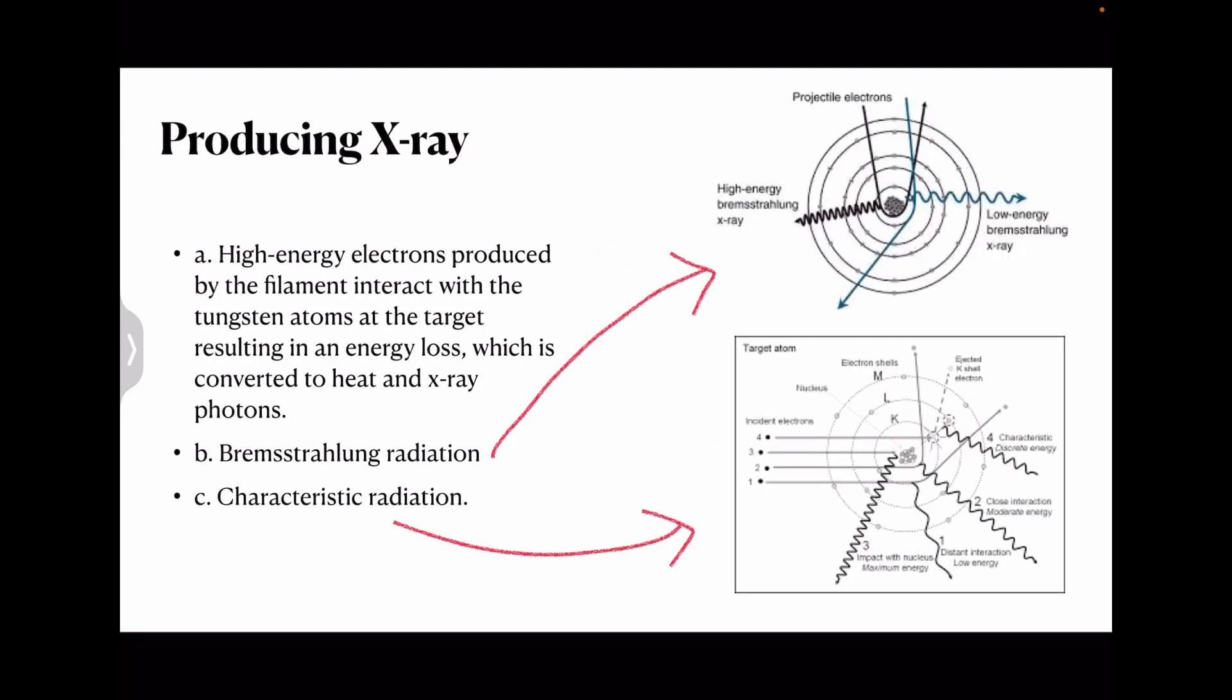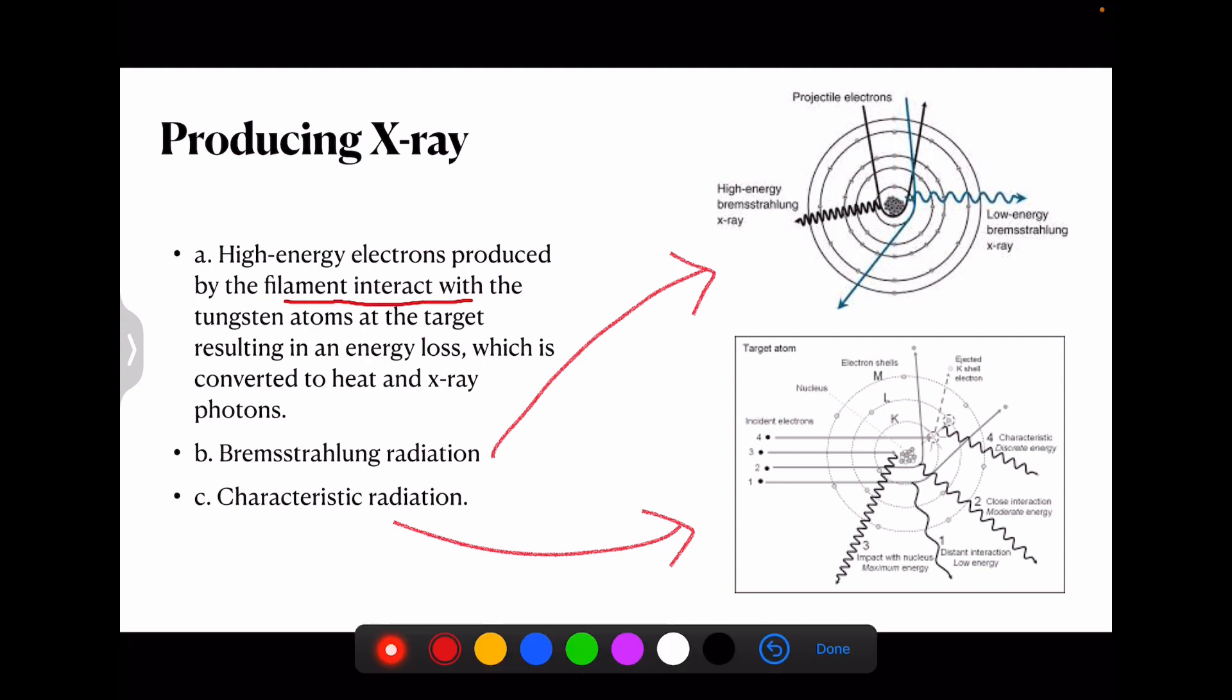Now coming to the production of x-ray. The production of x-rays is done basically by two types: that is the Bremsstrahlung radiation and the characteristic radiation. High energy electrons produced by the filament basically interact with the tungsten at the targets, resulting in energy loss which is converted into heat and x-ray. As soon as any electron loses or exits out of their orbit, it releases some energy. That energy is mostly transmitted or further reduced to an x-ray radiation. And that's how all this working happens.